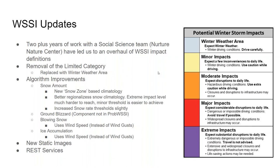A couple of changes you'll notice right away: we are really travel and daily life focused in these definitions. We've removed some of the more intense language in the moderate, major, and extreme categories. We've also removed the limited category and replaced it with a winter weather area, which serves as situational awareness for the footprint where there is snow in the grids or a ground blizzard, but not rising to the level of full impact. Our impact levels really start at minor going forward. We've also had major algorithm improvements to snow amount and ground blizzard, with tweaks to blowing snow and ice accumulation, plus new static images and REST services for GIS users.